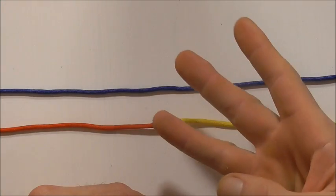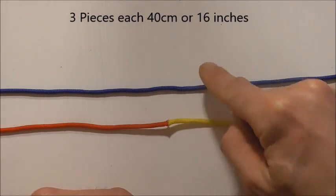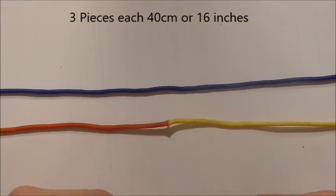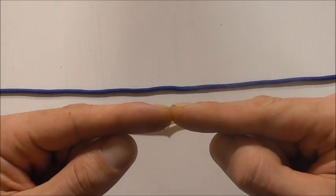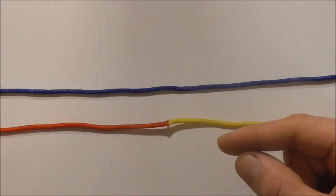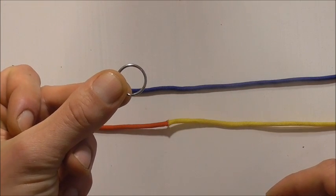To make this one I am using three pieces of paracord and each of these pieces are 40 centimeters long which is around about 16 inches. As you can see two of them I have already fused together just by using some heat and you are also going to need a split ring.